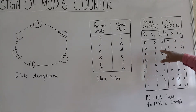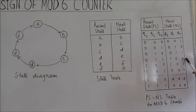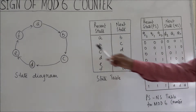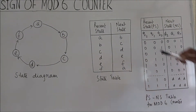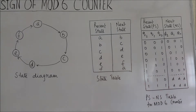Similarly, present state 1 goes to next state 2, present state 2 to next state 3, present state 3 to next state 4, present state 4 to next state 5, and present state 5 goes back to next state 0. A mod 6 counter would automatically count 6 after 5 and 7 after 6, but these two conditions are not desired in our design, which is why they are marked as don't care conditions.